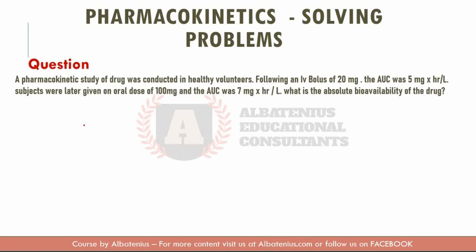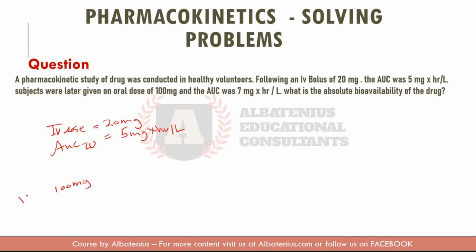The first question involves a pharmacokinetic study. We give the patient an IV bolus of 20 milligrams, and the AUC for IV was 5 milligrams multiplied by hour per liter. Then we gave them 100 milligrams as the PO dose, and the AUC for the oral dose was 7 milligrams.